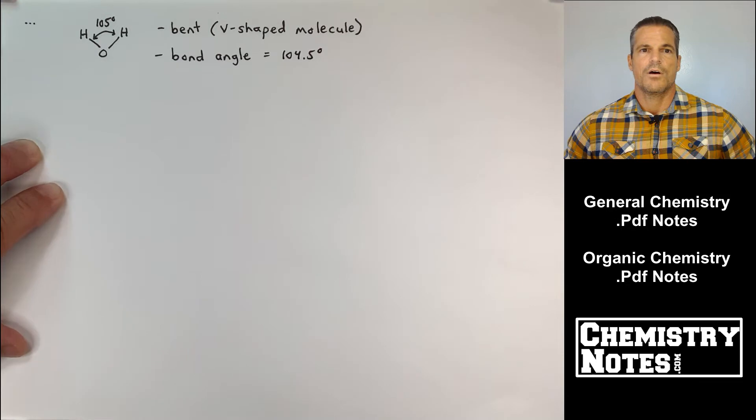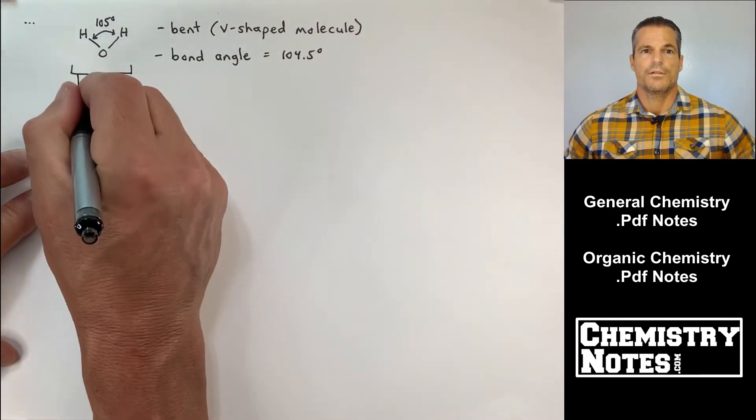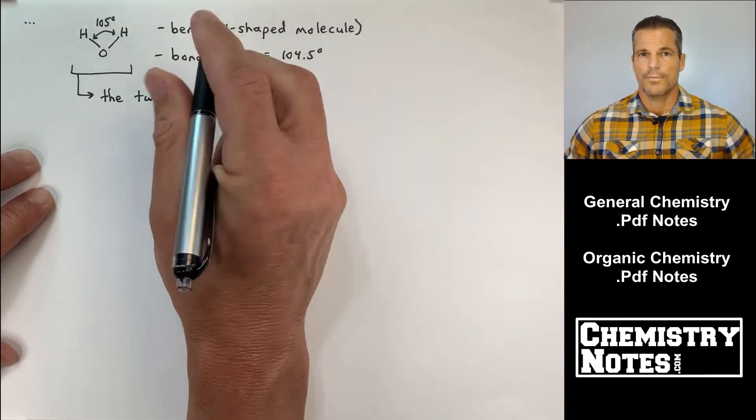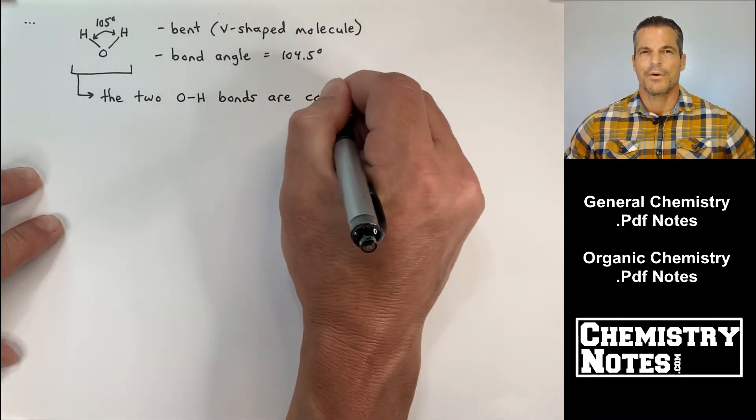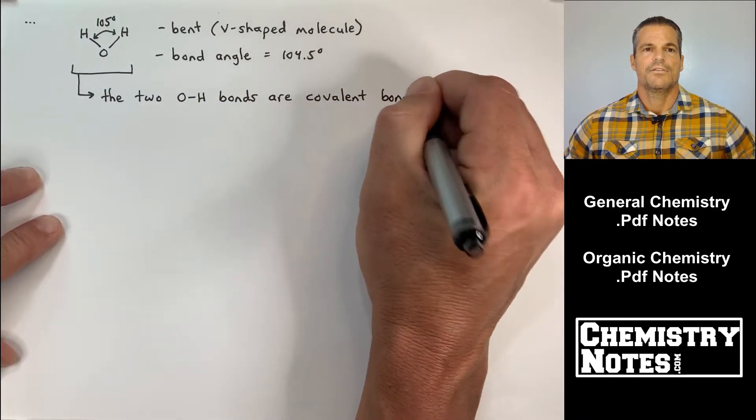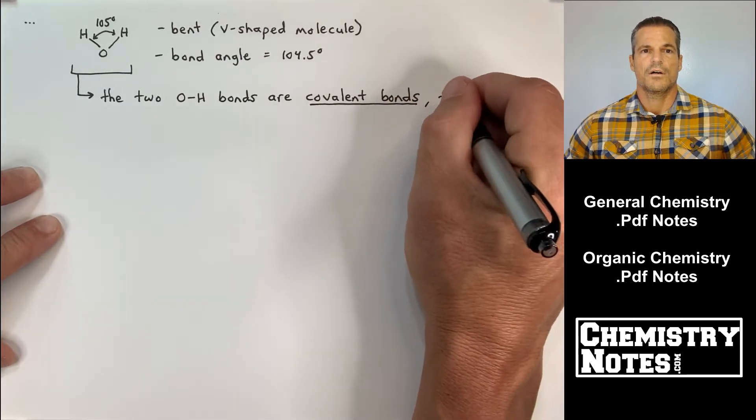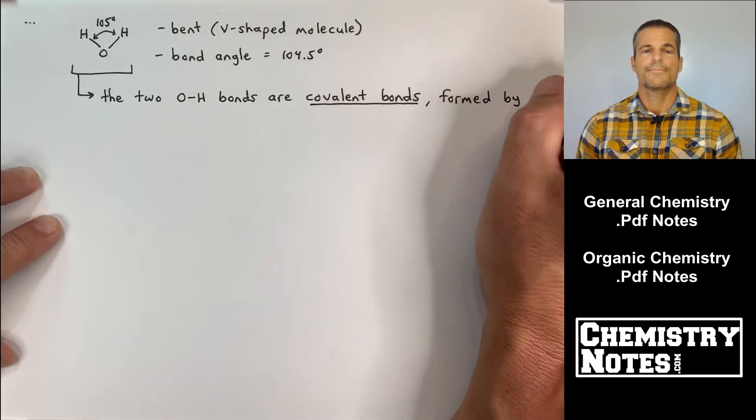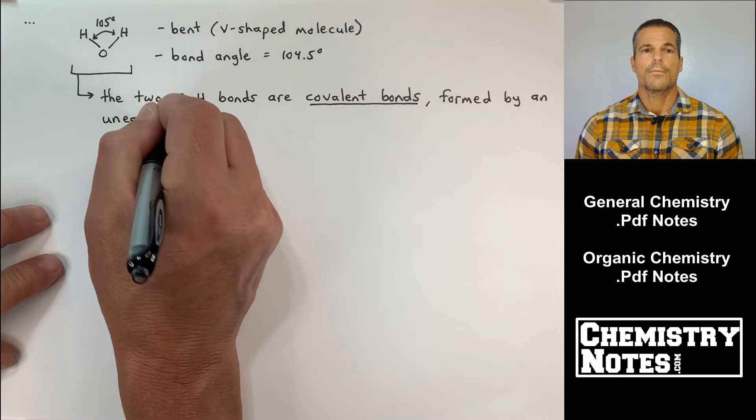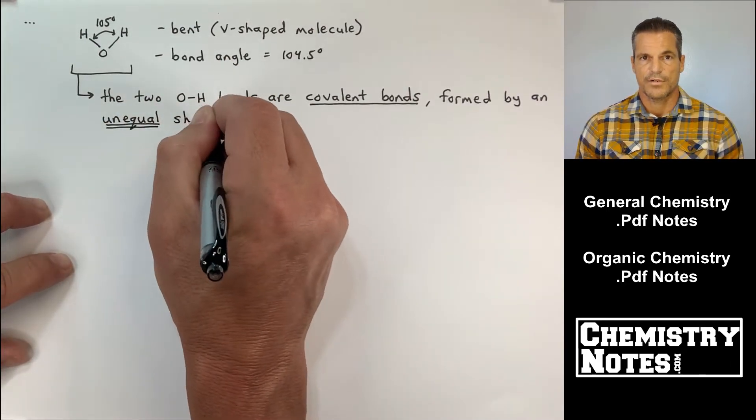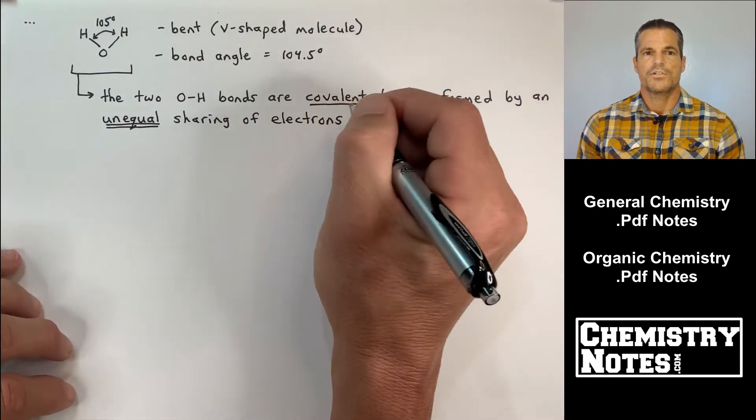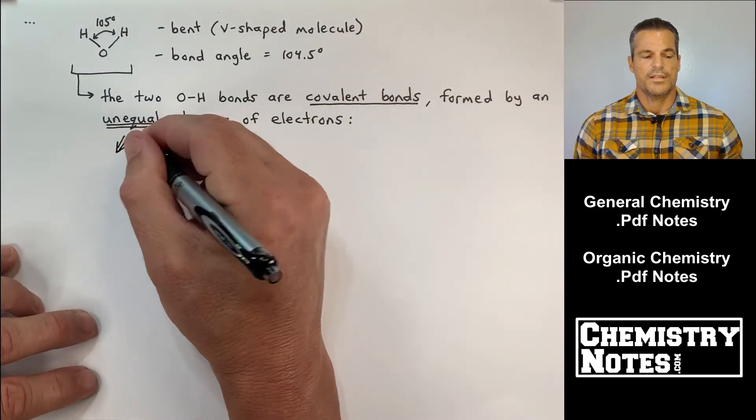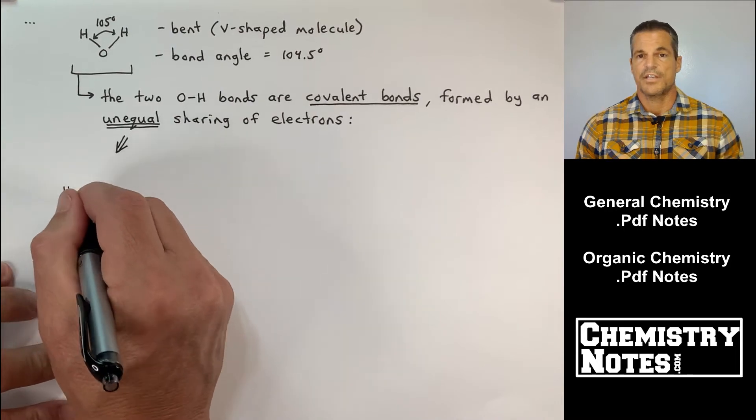So it's a bent molecule, it's V-shaped if you will. The bond angle is 104.5. Just know that it kind of looks like a boomerang for right now. And the two OH bonds are covalent bonds formed by an unequal sharing of electrons. Okay, so an unequal sharing of electrons we'll learn in later chapters or later sections.